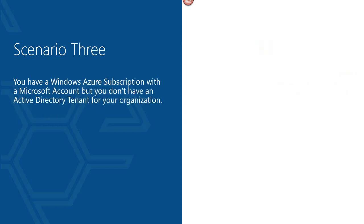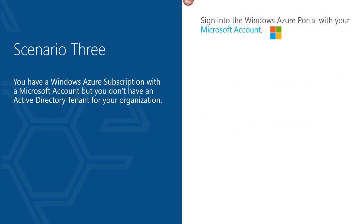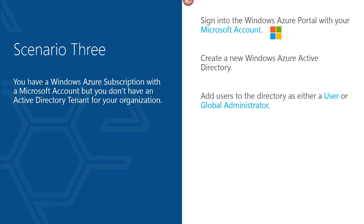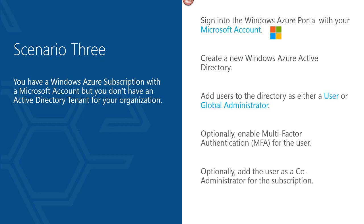Scenario three is a little trickier. You already have a Windows Azure subscription with a Microsoft account, but no Active Directory tenant for your organization. Step one: sign into the Windows Azure portal with your Microsoft account — identified by the four-color Windows logo icon. Next, create a new Active Directory in the Azure management portal. Then add users — either regular users or global administrators. Global administrators can administer the directory, such as adding and removing users. Optionally, you can enable multi-factor authentication and add directory users as co-administrators on the Windows Azure subscription, allowing them to provision services like virtual machines.